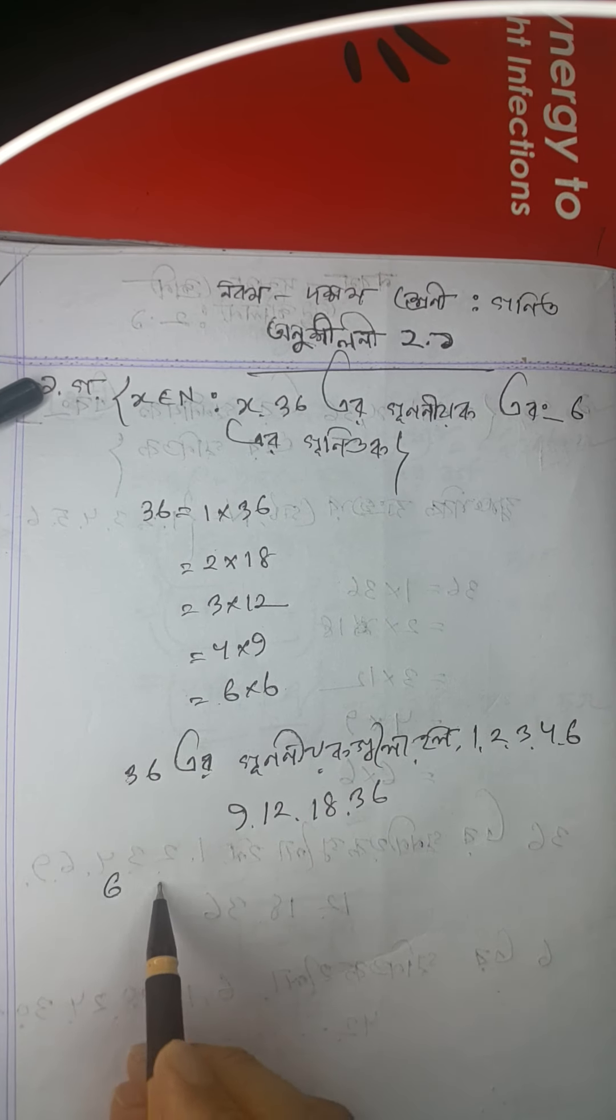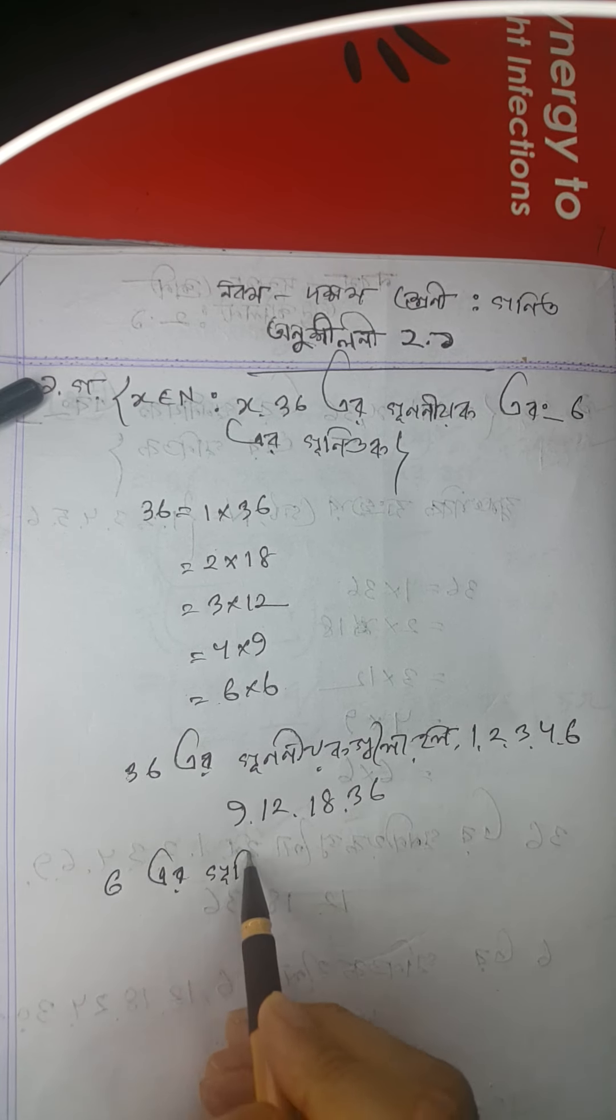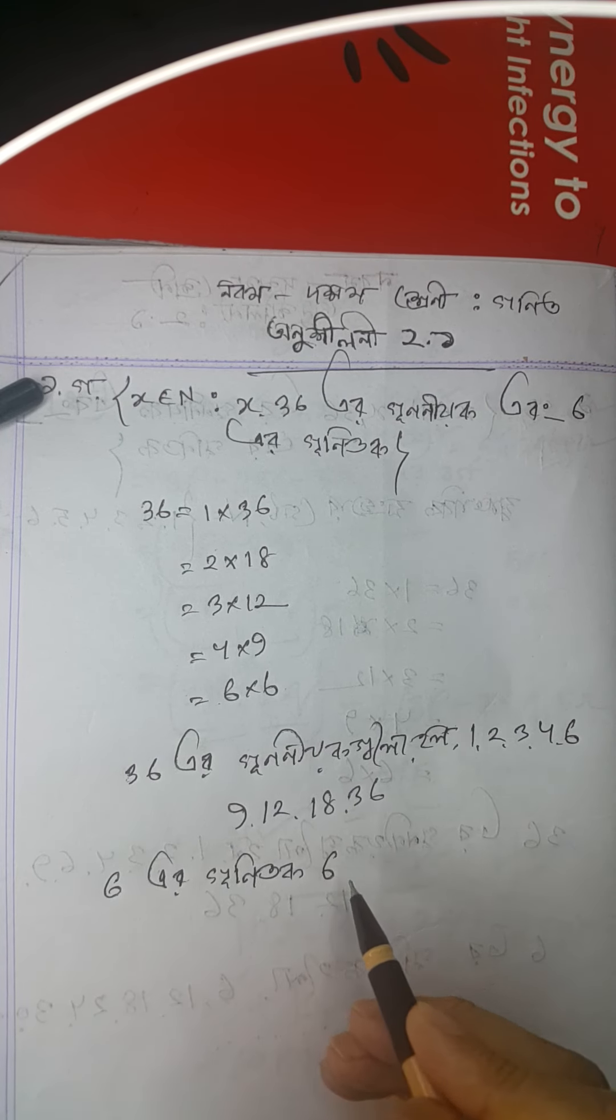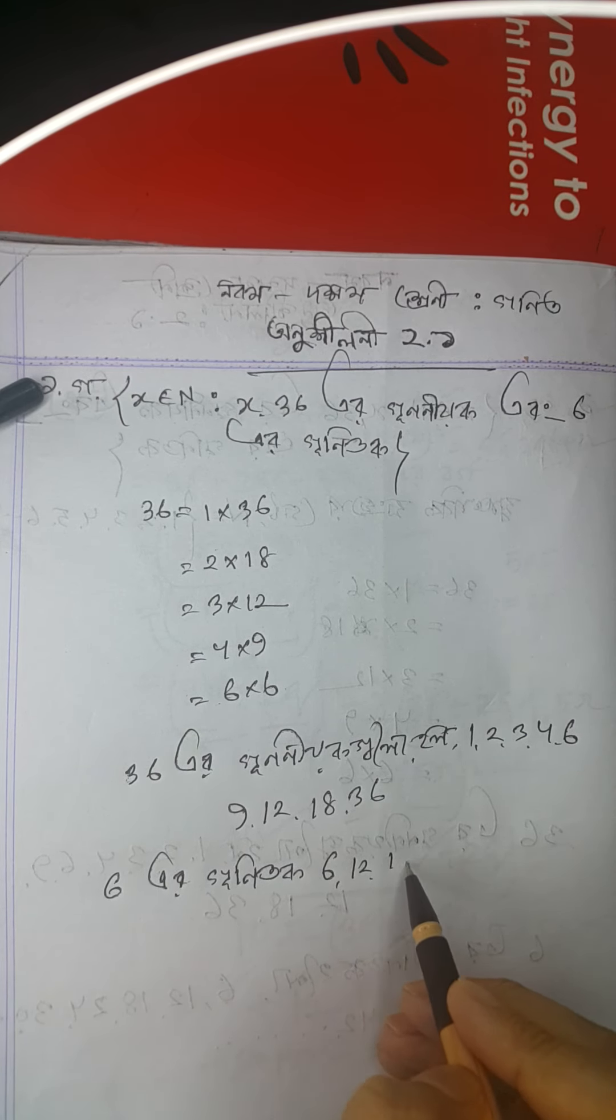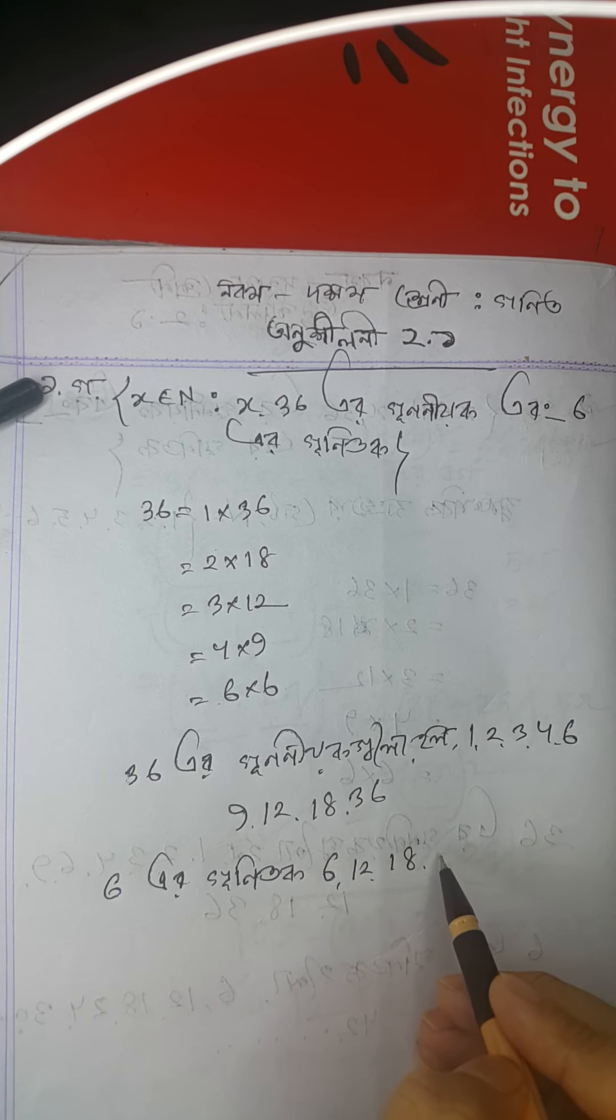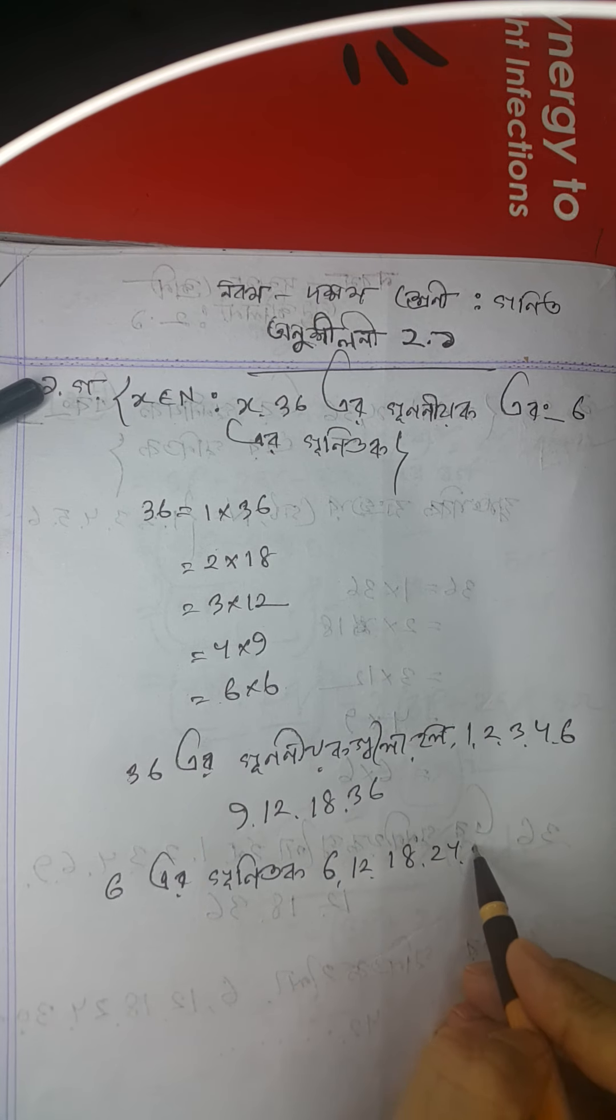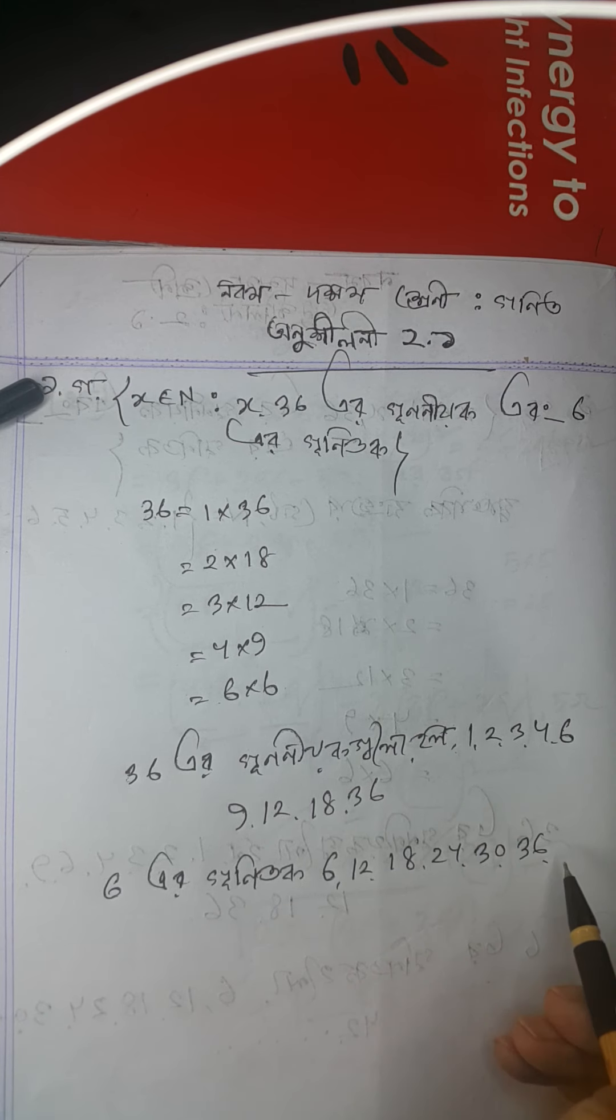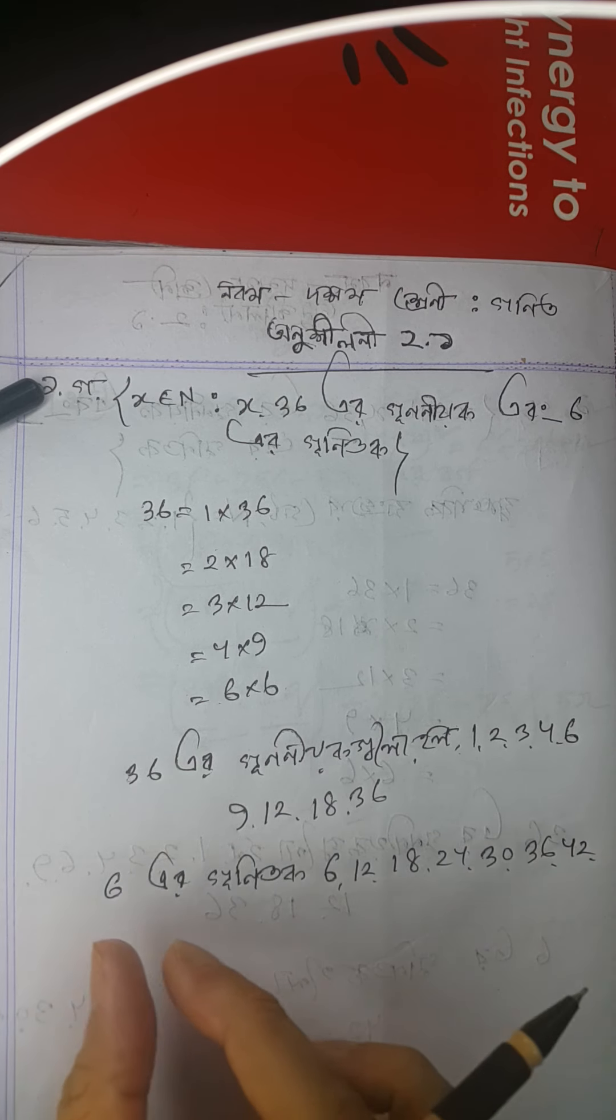Now we need to find which of these factors are also multiples of 6. The multiples of 6 include 6, 12, 18, 24, 30, 36, and so on. We need to find the common elements between the factors of 36 and multiples of 6.